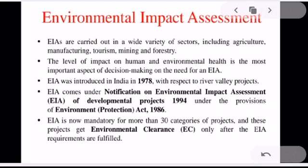In India, EIA was introduced in 1978 with respect to river valley projects. Later, the EIA legislation was enhanced to include other development sectors also. EIA comes under the Notifications on Environmental Impact Assessment of Developmental Projects 1994, under the provisions of the Environmental Protection Act 1986. The government of India under the Environmental Protection Act 1986 issued a number of other notifications related to Environmental Impact Assessment. Now, EIA is mandatory for more than 30 categories, and these projects get environmental clearance only after EIA requirements are fulfilled.